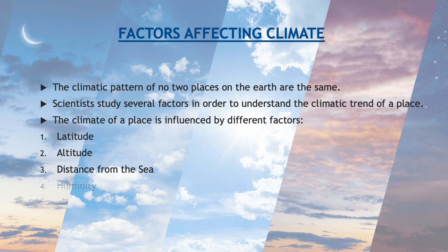The climatic pattern of no two places on the earth are the same. Scientists study several factors in order to understand the climatic trend of a place. The climate of a place is influenced by different factors: latitude, altitude, distance from the sea, humidity and direction of wind.